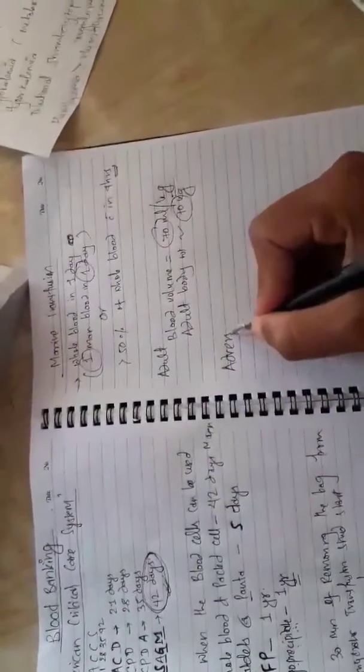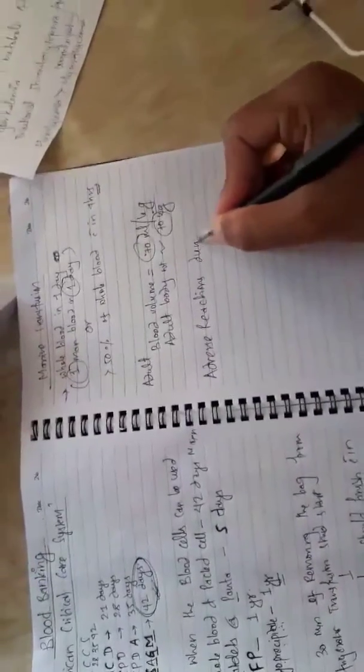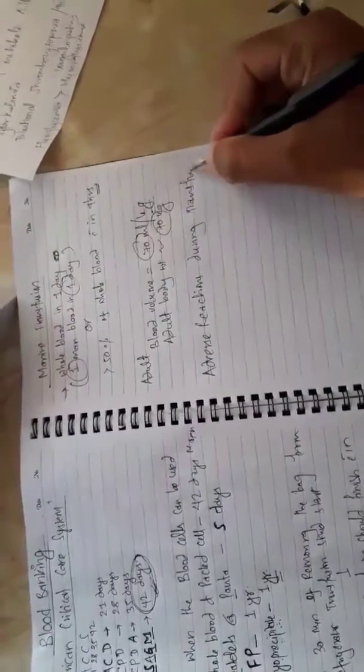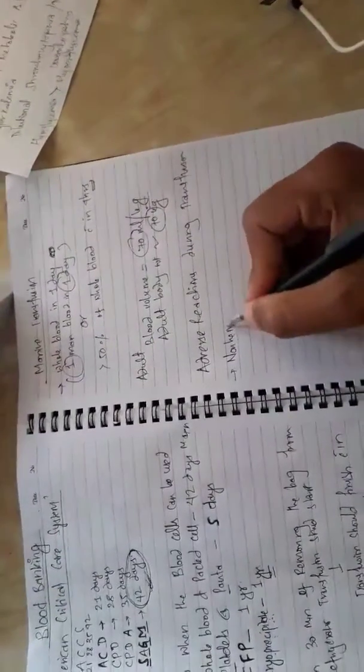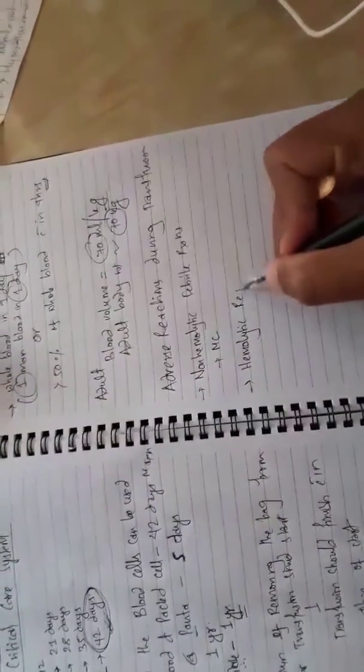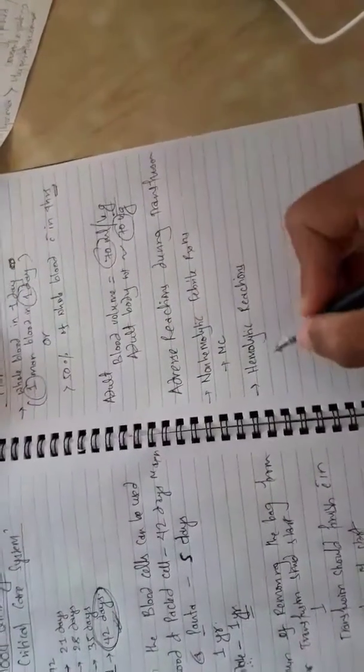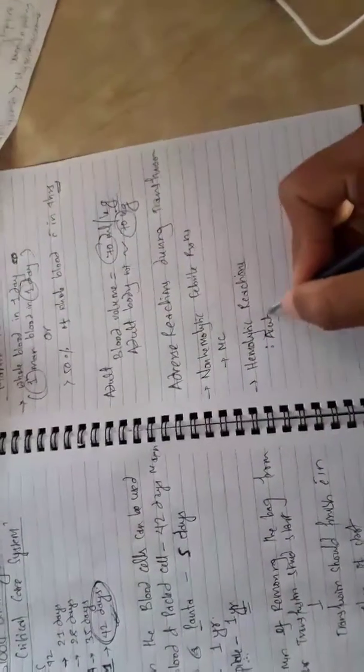Regarding reactions during transfusion: non-hemolytic febrile reactions are the most common adverse reactions during transfusion. Other are hemolytic reactions. In hemolytic reactions, acute hemolytic reaction occurs within 24 hours and delayed hemolytic reaction occurs more than 24 hours to 14 days.